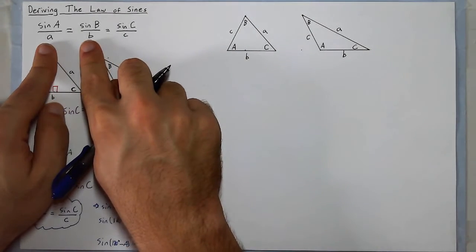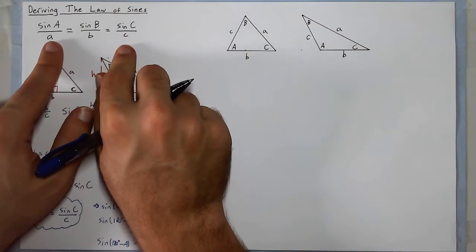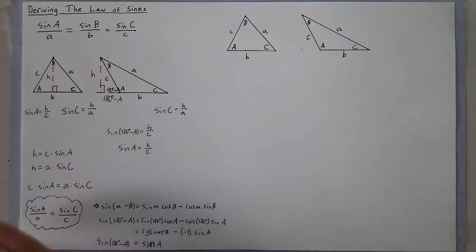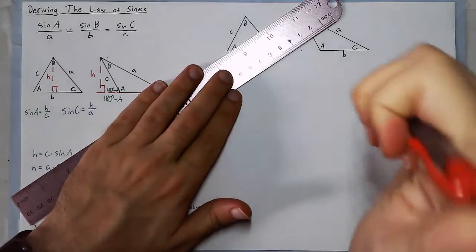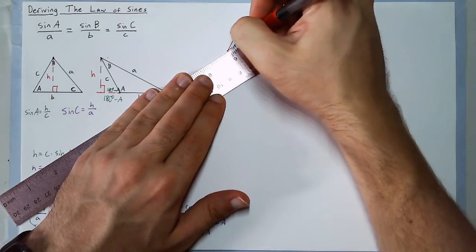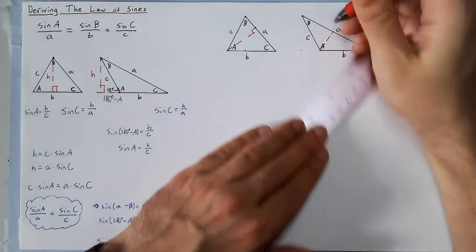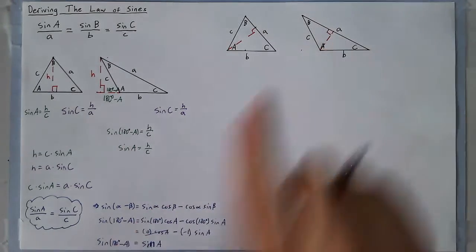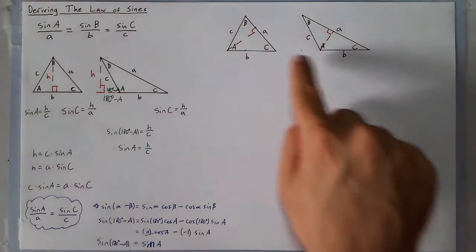I haven't included sine of B yet, so I need to show that as well. If I can show sine of B over b equals either of these expressions, then by the transitive property all three are equal. To do this, I'm going to draw a height from vertex A — a new altitude perpendicular to the opposite side — and call that height H prime since it's a different height from before.